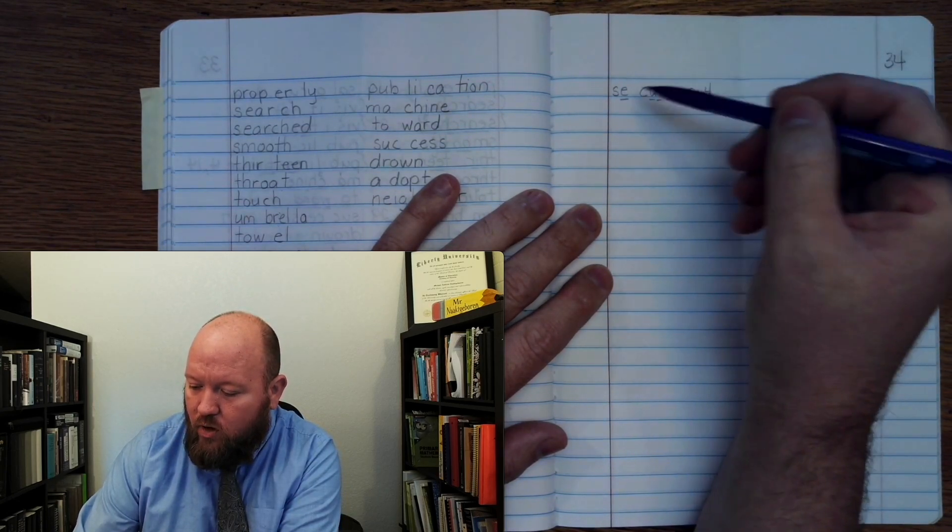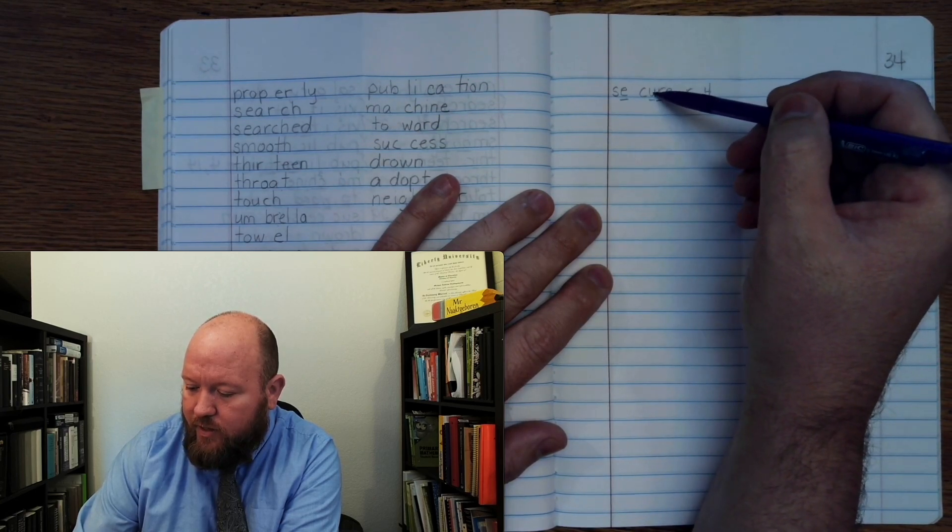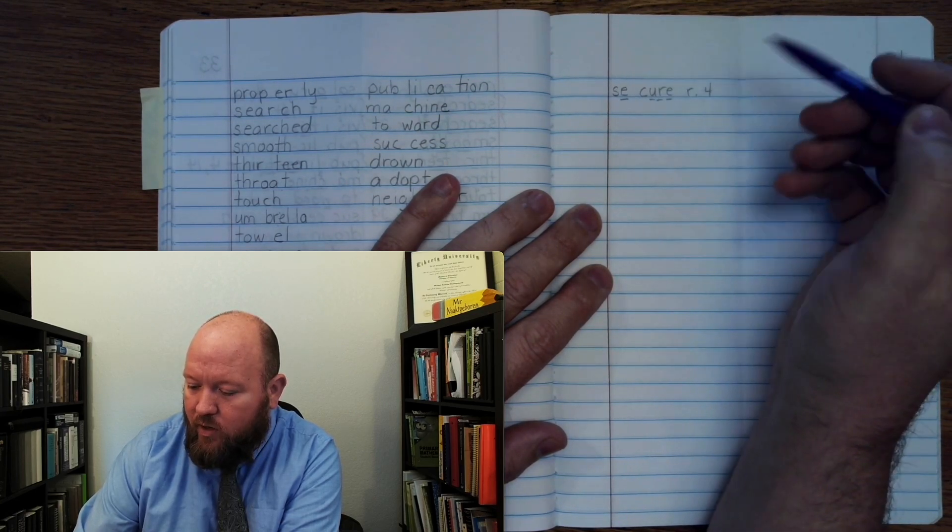So here, rule four. E may say E at the end of a syllable. Rule four. And here the E is letting the U say U. Job one of the silent final E.